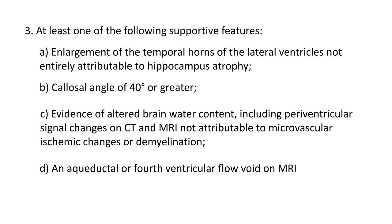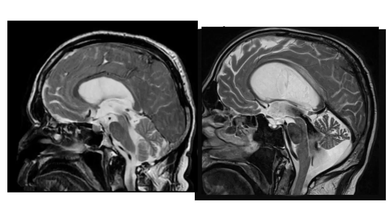Finally, there should be an aqueductal or fourth ventricular flow void on MRI, which you can see here — this dark signal between the third and fourth ventricles is the flow void. On MRI, it represents a loss of signal correlated with hyperdynamic CSF flow.